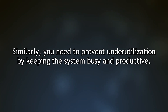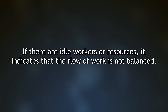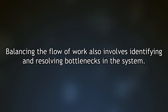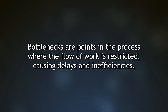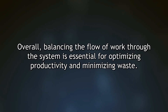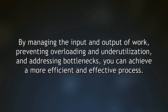Similarly, prevent underutilization by keeping the system busy and productive. If there are idle workers or resources, it indicates the flow of work is not balanced. You can adjust the input of work to match system capacity or find ways to utilize idle resources more effectively. Balancing the flow also involves identifying and resolving bottlenecks — points where work is restricted — to ensure a smooth, continuous flow and optimize productivity while minimizing waste.